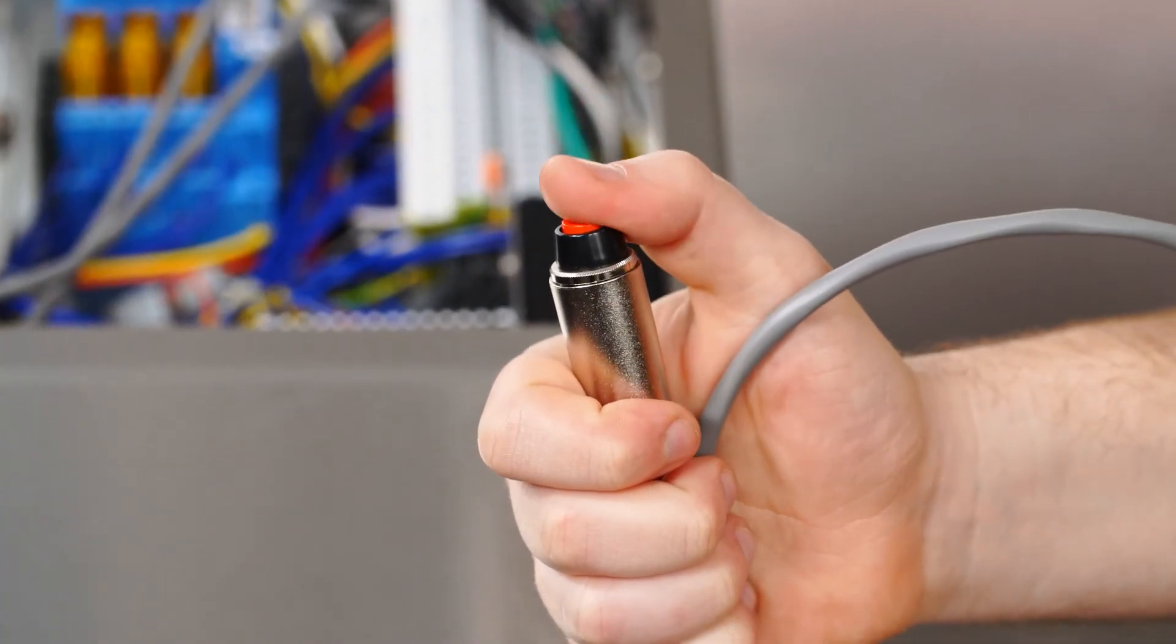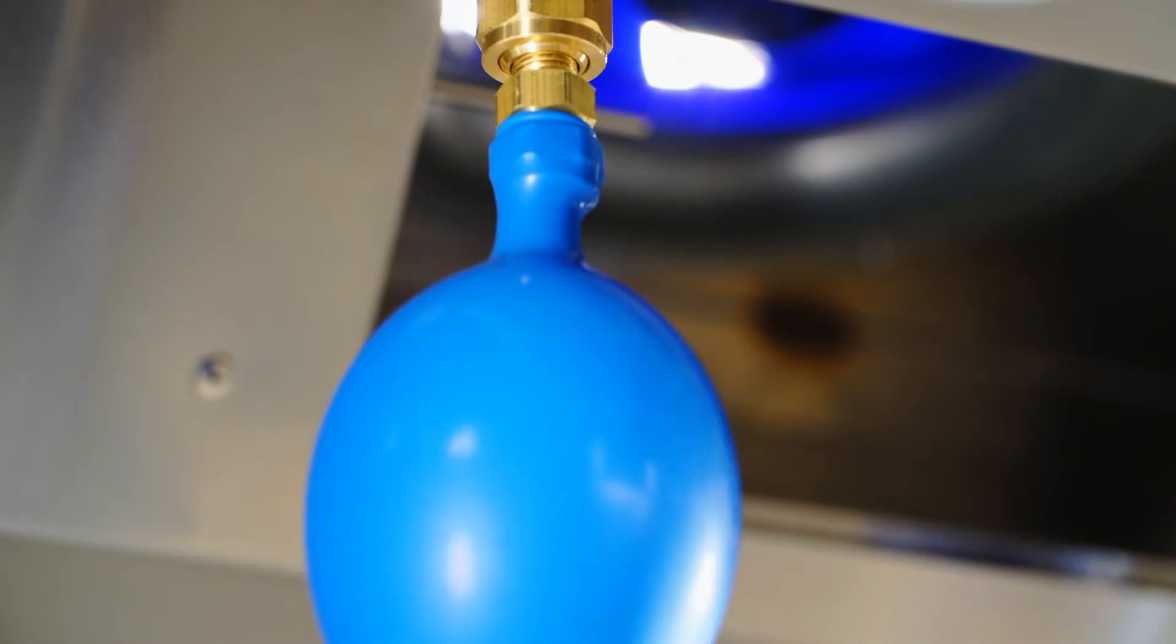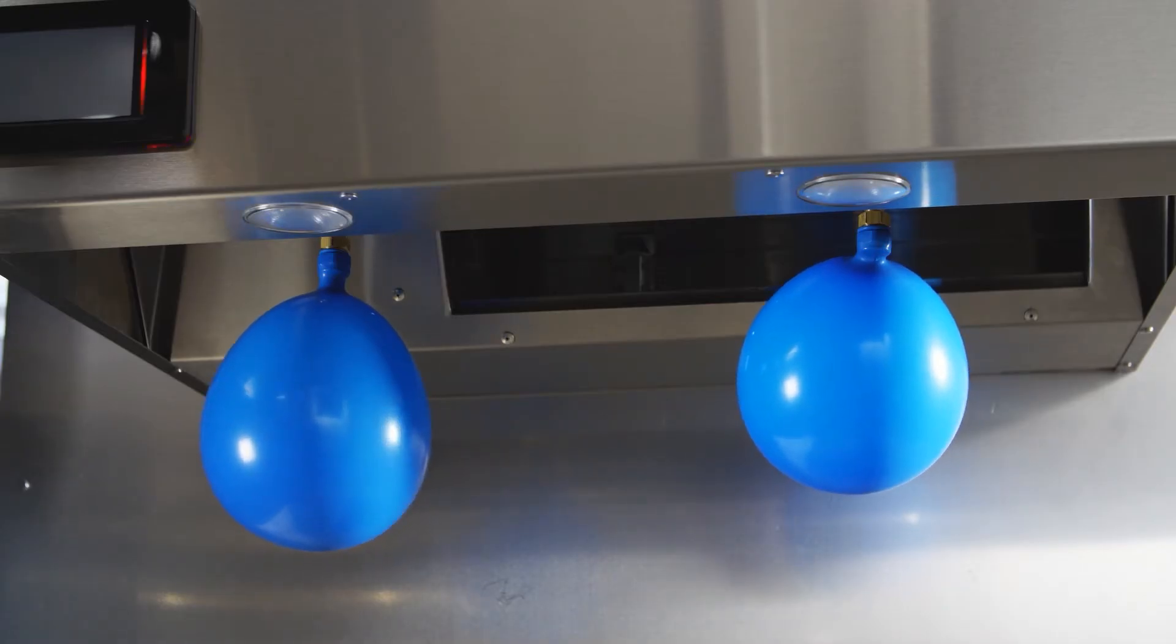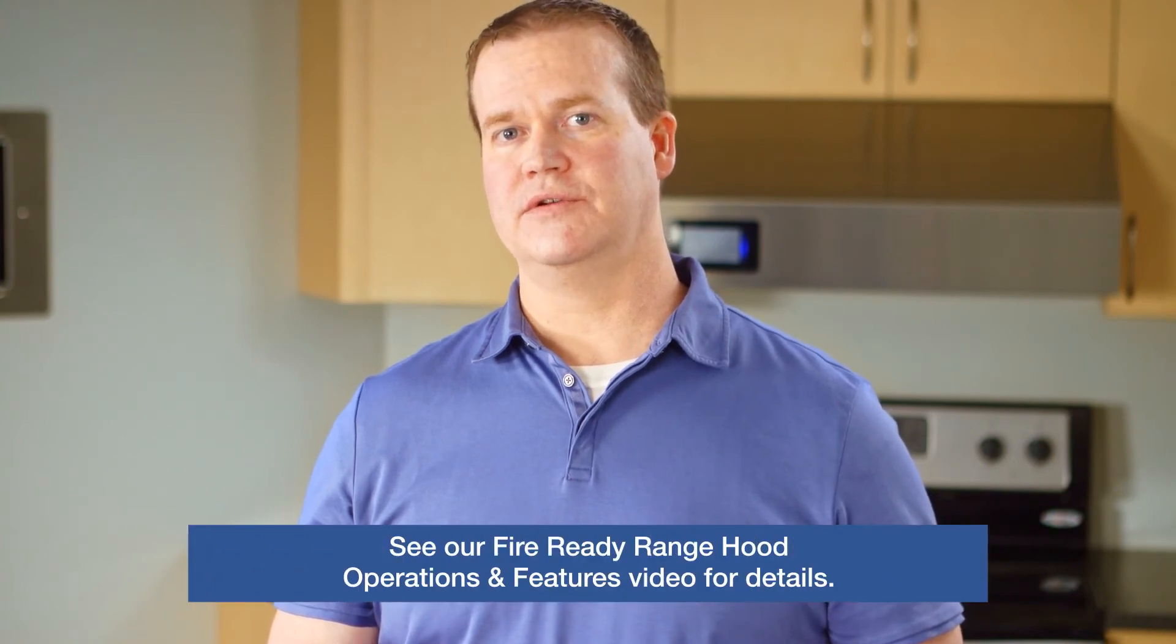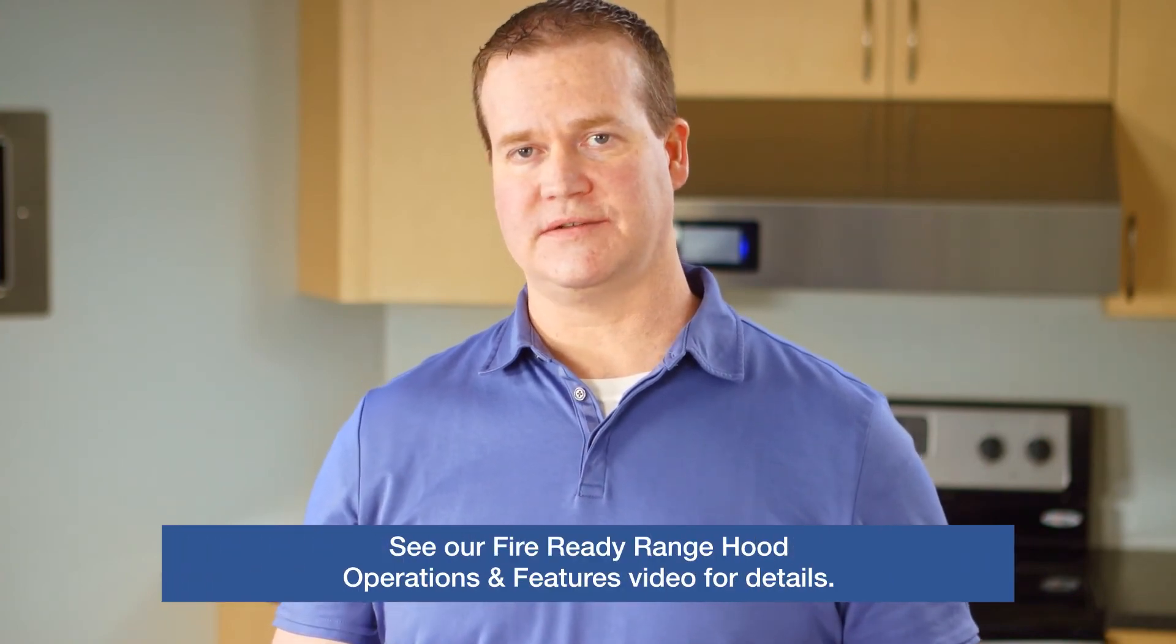Press the red button on the test tool or pull the pull station lever to simulate a fire. As we just observed, the test tank has depressurized due to the system's activation of the solenoid latch on the tank. The disconnect has also shut down the electric or gas range disconnect. Additionally, if the system is tied to a building alarm panel, a signal is sent to trigger its activation. Please see our video on hood operation for further details on this.